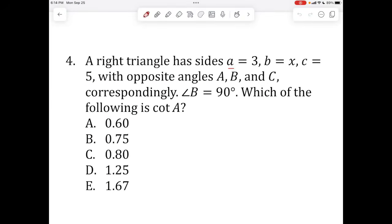Next problem. A right triangle has sides a equals 3, b equals x, and c equals 5, with opposite angles a, b, and c correspondingly. Angle b is 90 degrees. Which of the following is cotangent of a? So first of all, what is a cotangent? If you remember, SOHCAHTOA is sine, cosine, and tangent. So sine is opposite over hypotenuse. Cosine is adjacent over hypotenuse. And tan is opposite over adjacent. So you also have cosecant, secant, and cotangent, which is basically all three of these, but you just flip the fraction. So cotangent is just equal to adjacent over opposite.